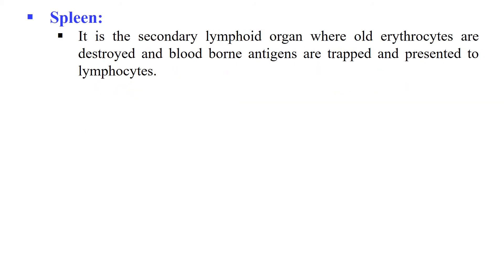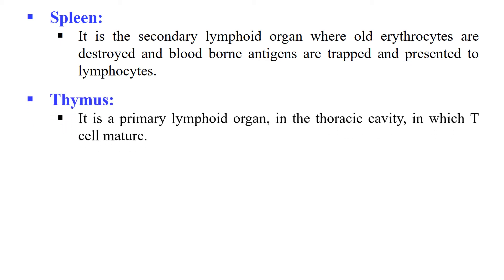Spleen is a secondary lymphoid organ which provides the site for interaction between immune cells and antigen. It is also known as the graveyard of RBCs, because old erythrocytes are destroyed in the spleen. Thymus is a primary lymphoid organ where T cells mature.